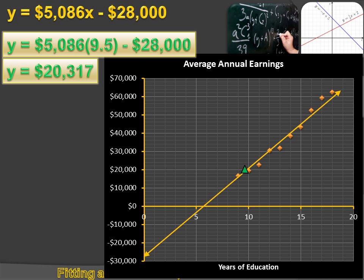And that would be that point on the graph. I could determine that y was $20,317, either by putting 9½ into the equation, y equals $5,086x minus $28,000, or by going up the equation until I got to 9½, and then finding out what my y value was. And we call that interpolation. We're estimating or predicting a value, and it's within our data points. It's an interpolation. That x value is not below or above the range of x values that we've actually got in our survey.